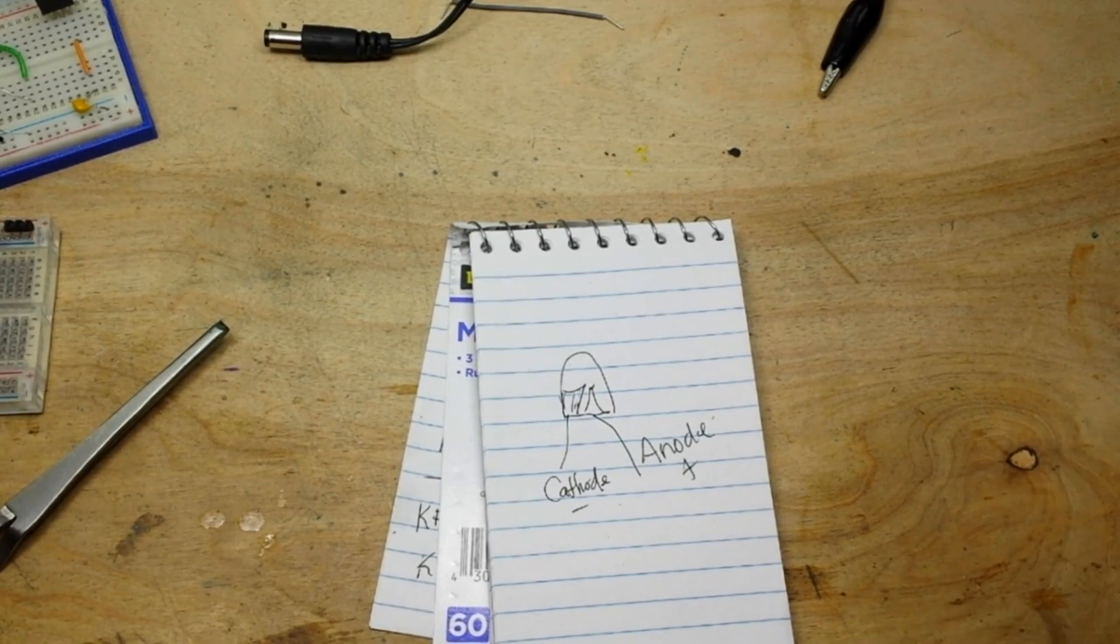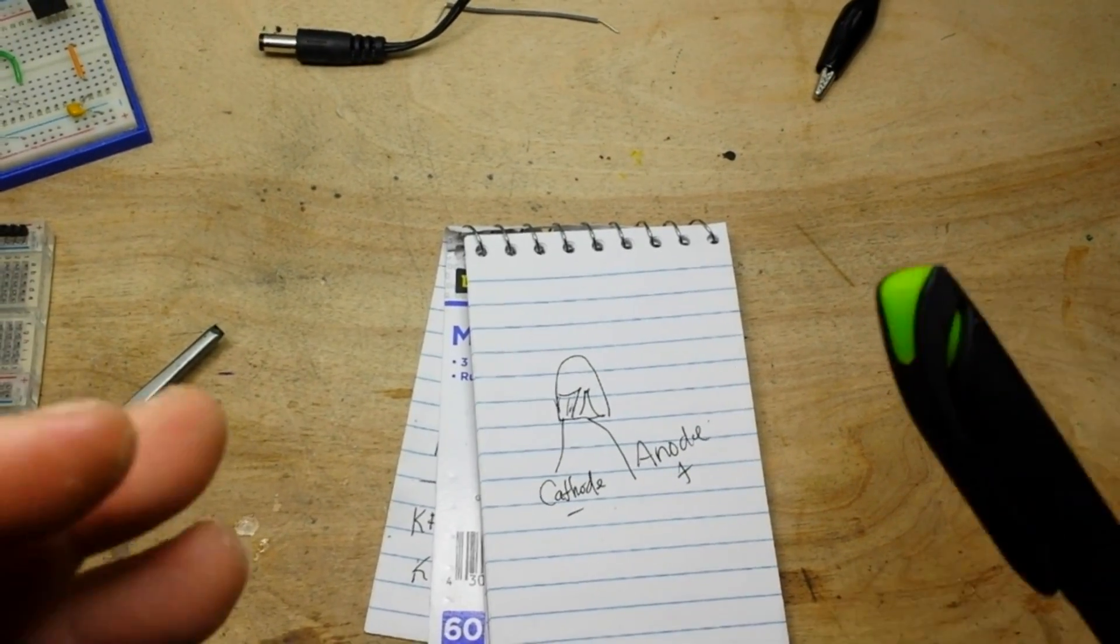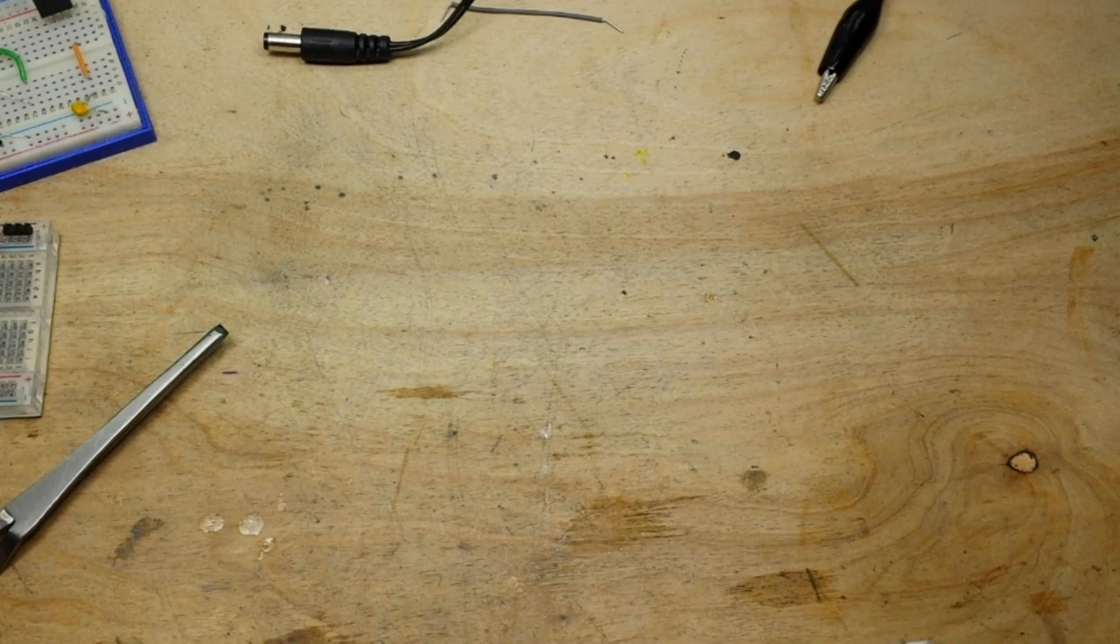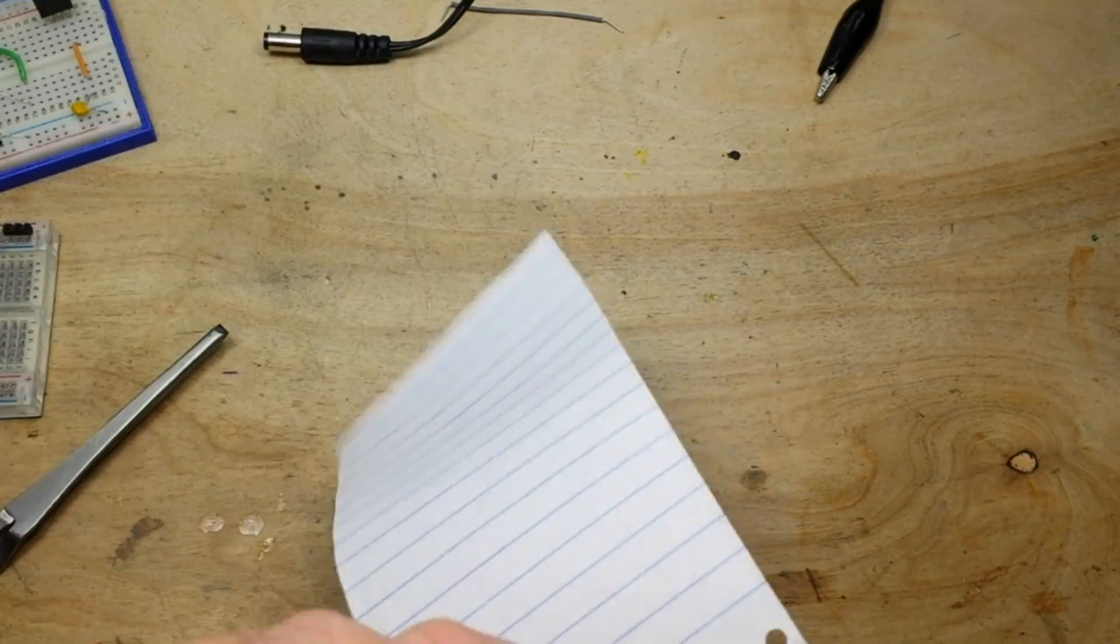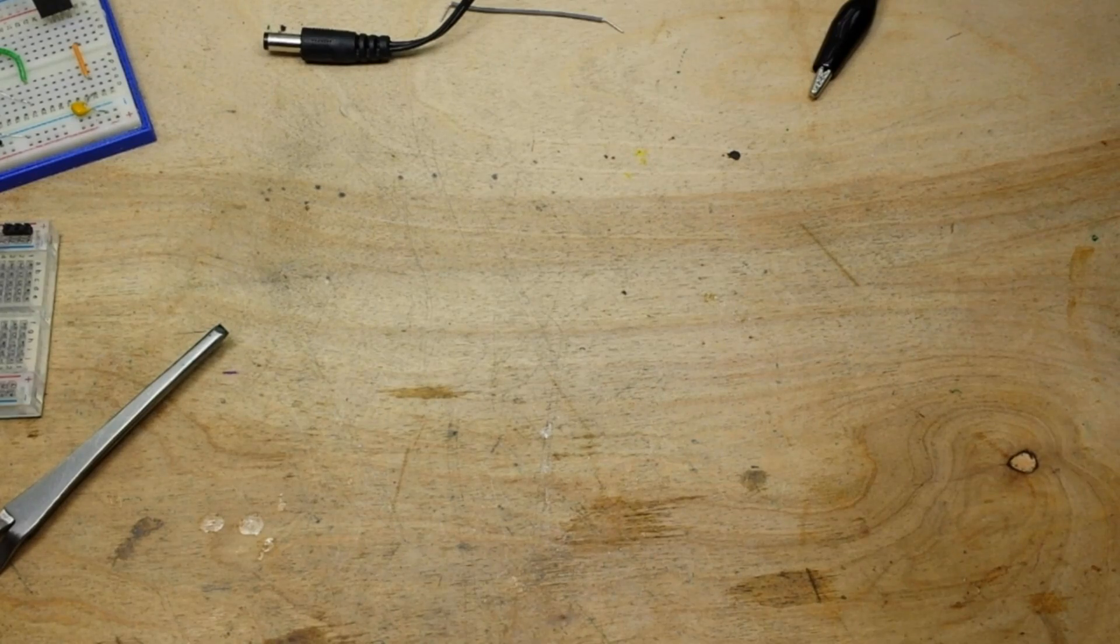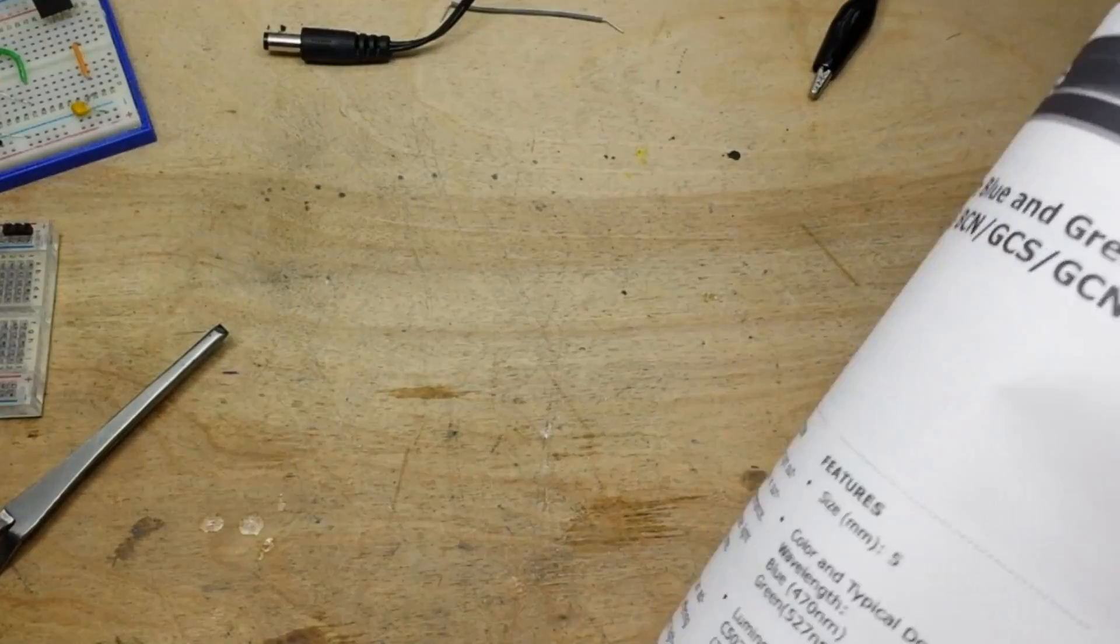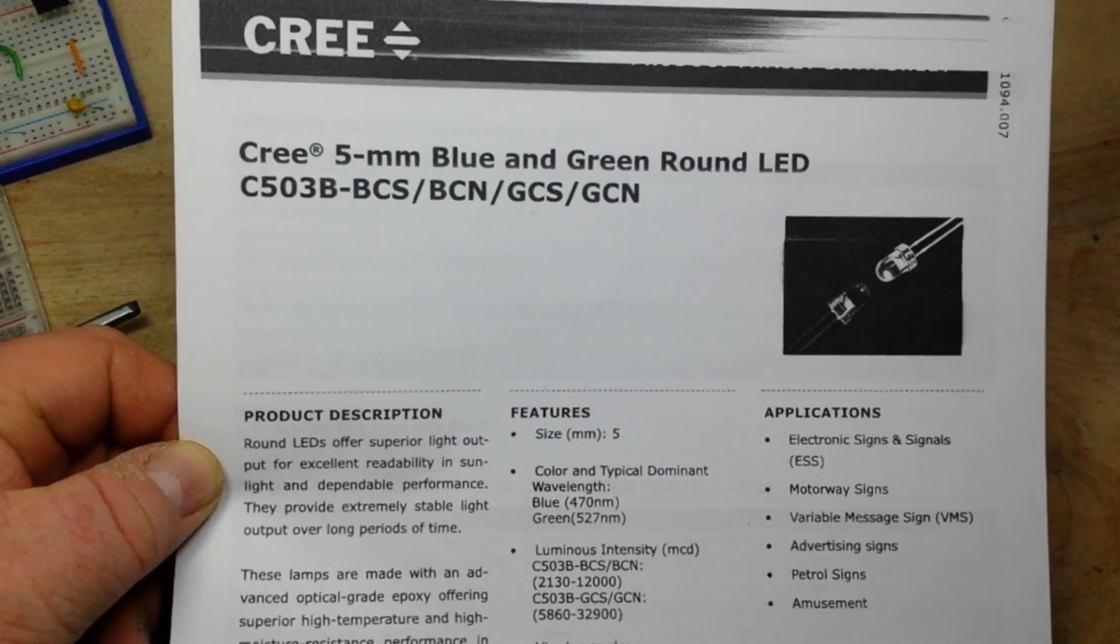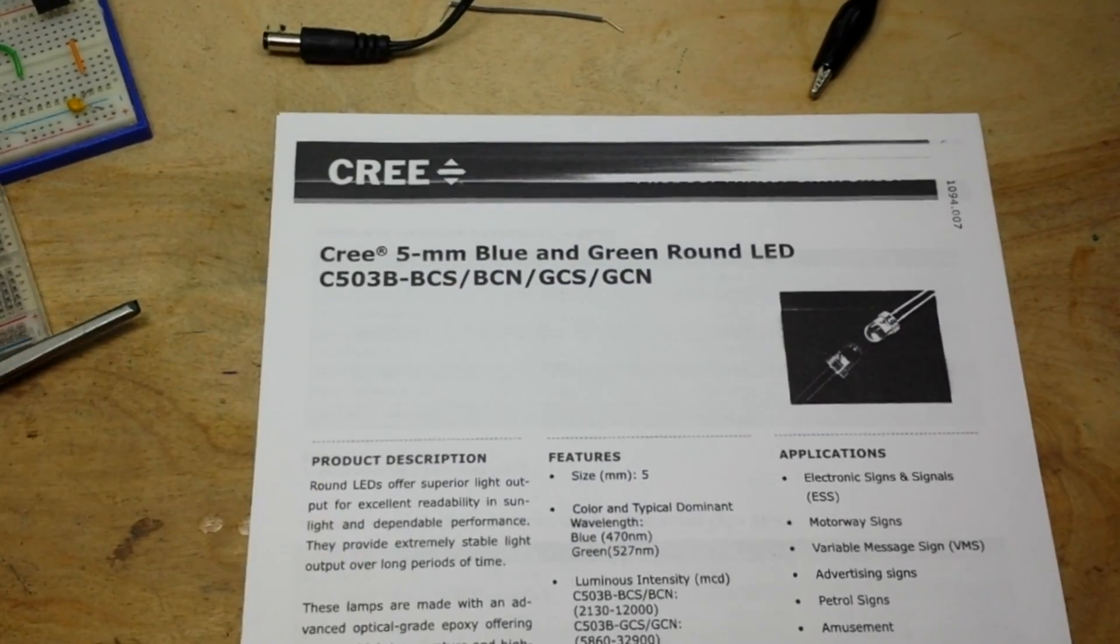So, how do we figure out how to set up our LEDs so they don't explode? Well, don't worry, there's a simple mathematical formula for it. But you need to know a few things before you can use that simple mathematical formula. And if you're buying your LEDs from somewhere like Digi-Key, for instance, well then you can download the data sheets for your LEDs.